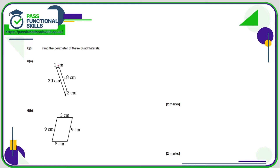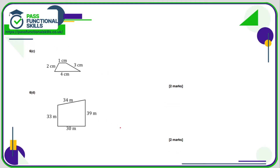For this question, just add up all the side lengths — there aren't any missing. 20 plus 18, or 18 plus 2 is 20, so 40, that's 41 — use a calculator if you're not sure. 9 plus 9 is 18, plus 10 is 28. The next gives 10. For D, use a calculator — add them all up and you'll get 136 metres.